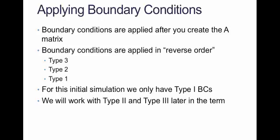Boundary conditions are applied after you create the A matrix because they require that you modify the A matrix in some way to account for the boundary conditions. They're always applied in reverse order: you apply Type 3, Type 2, and Type 1. For the initial simulation, we had only Type 1, and for this video we'll focus on Type 1 and work with Type 2 and Type 3 later in the term when they naturally come into the problem.